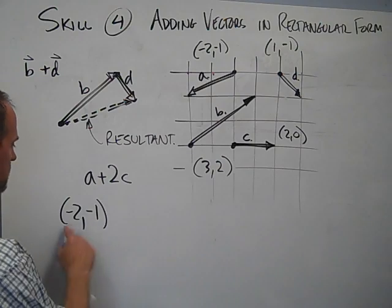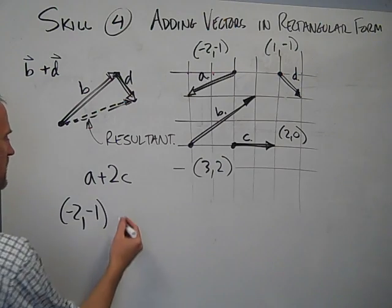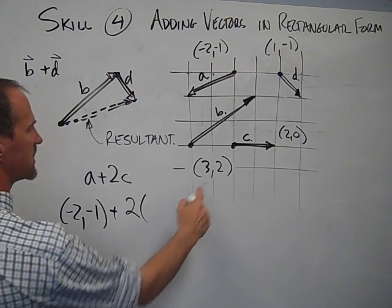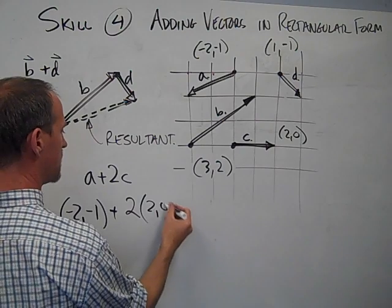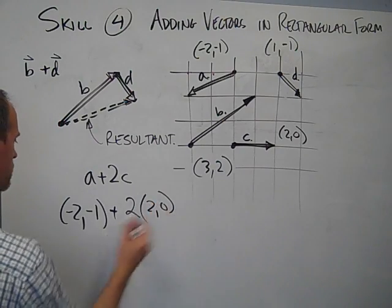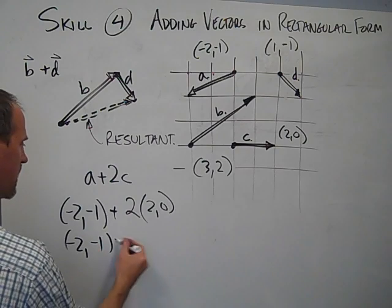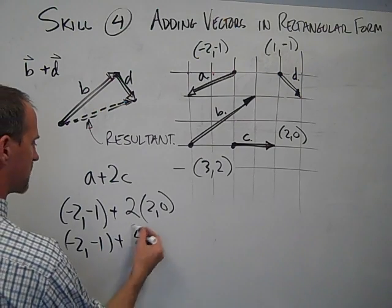Okay, so if I did this, all I need to do is think of the algebra of the numbers, plus 2 times, and then I can write C, which is 2, 0. I distribute the 2 in, so that's negative 2, negative 1, plus 4, 0, and that's equal to 2, negative 1.